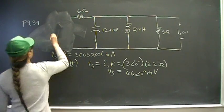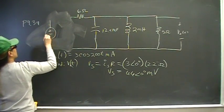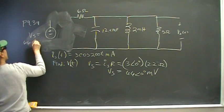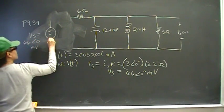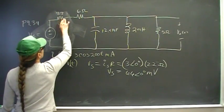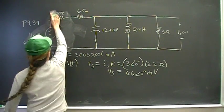I will replace this with my source transformation. This then becomes V_S equal to 66 angle 0 millivolts, 22 in series with 6, which is going to become 28.